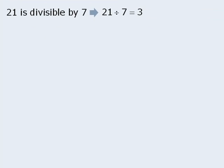Another way to express divisibility is to say that 21 is divisible by 7 because when we divide 21 by 7, we get 3 with no remainder. In other words, the remainder here is 0.